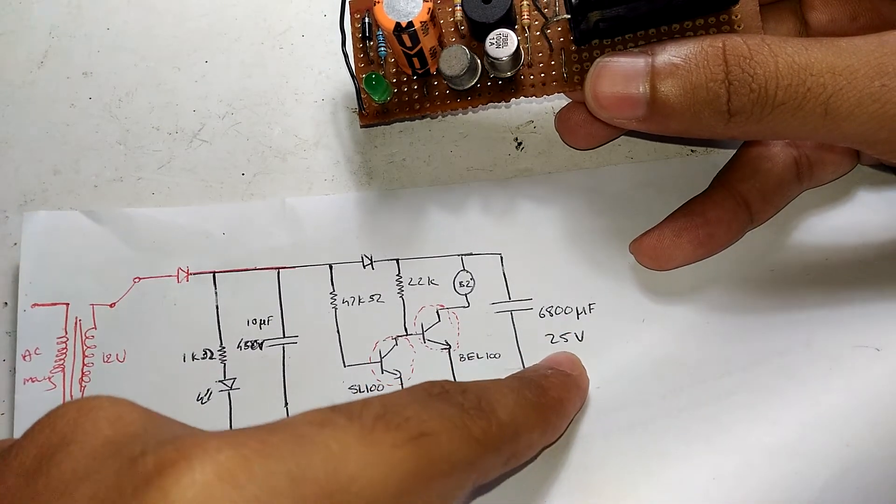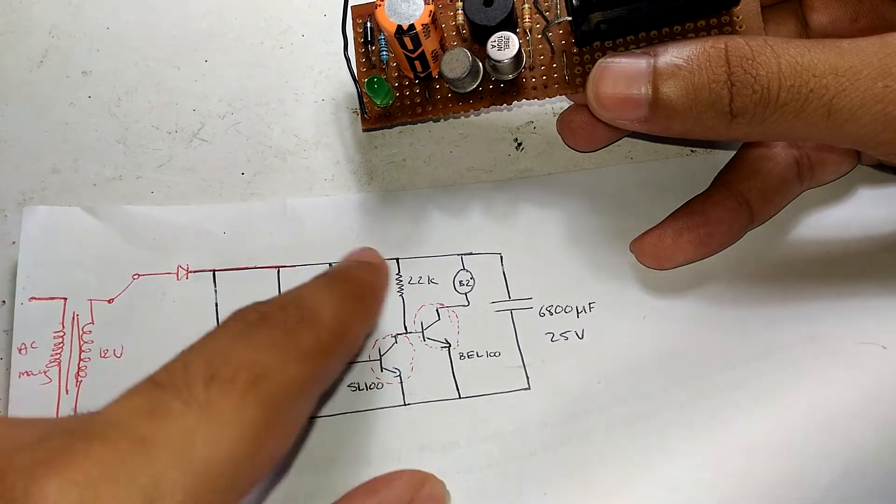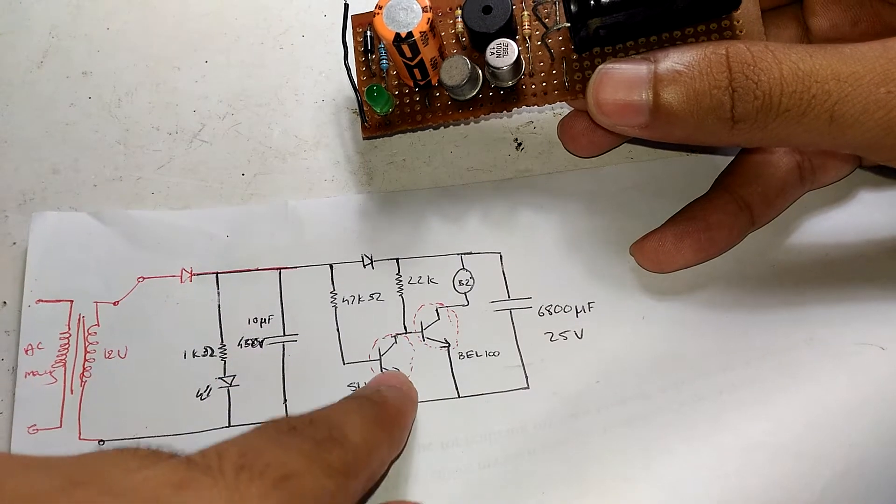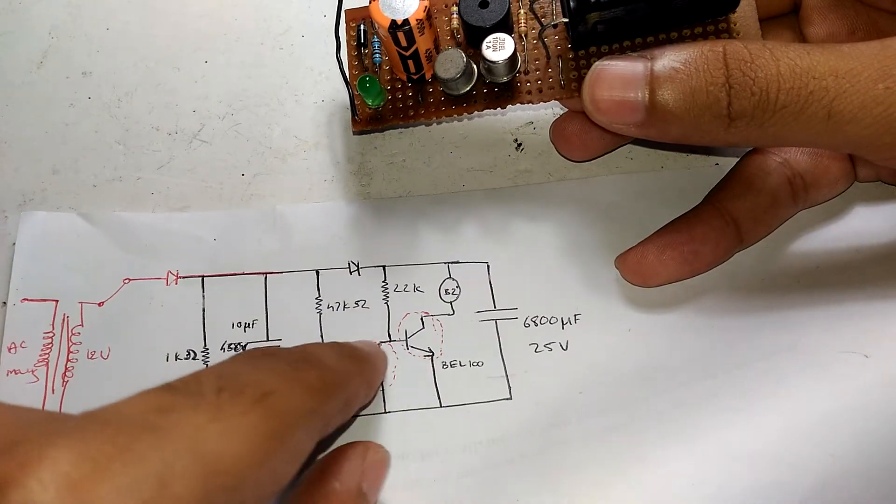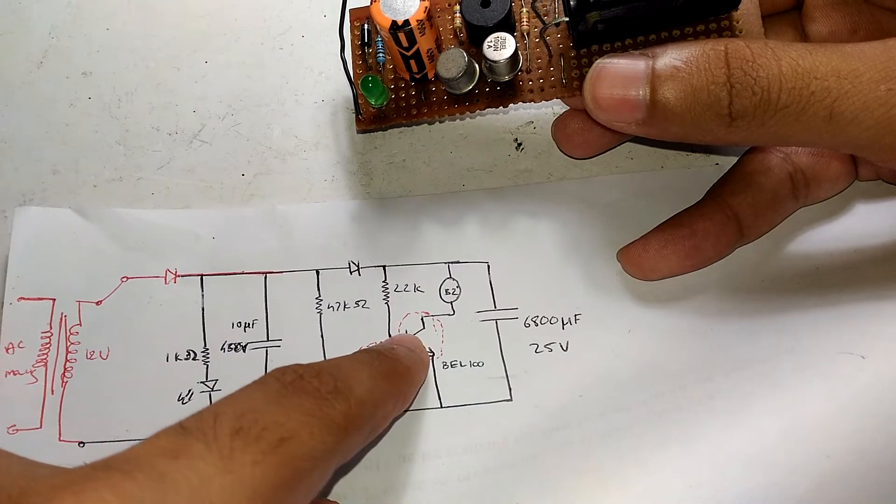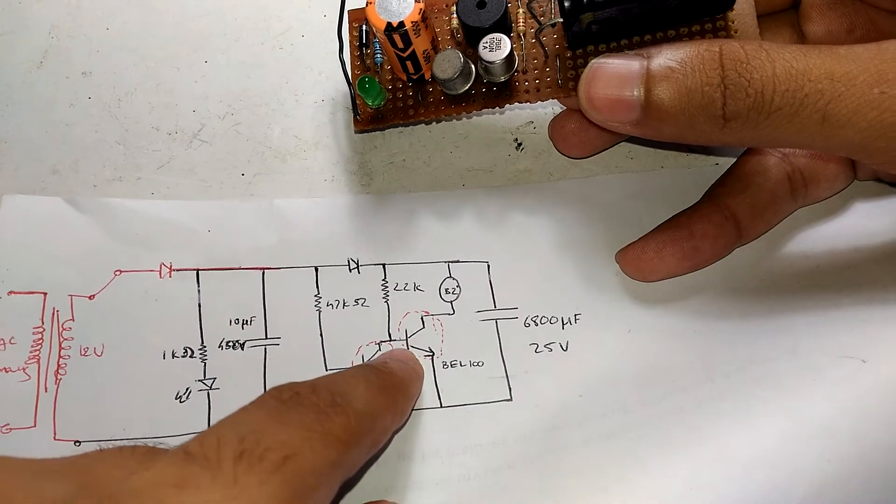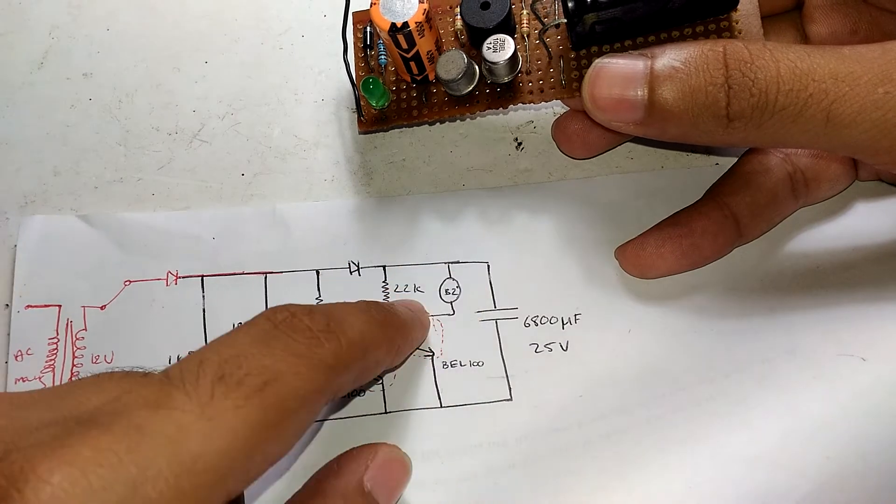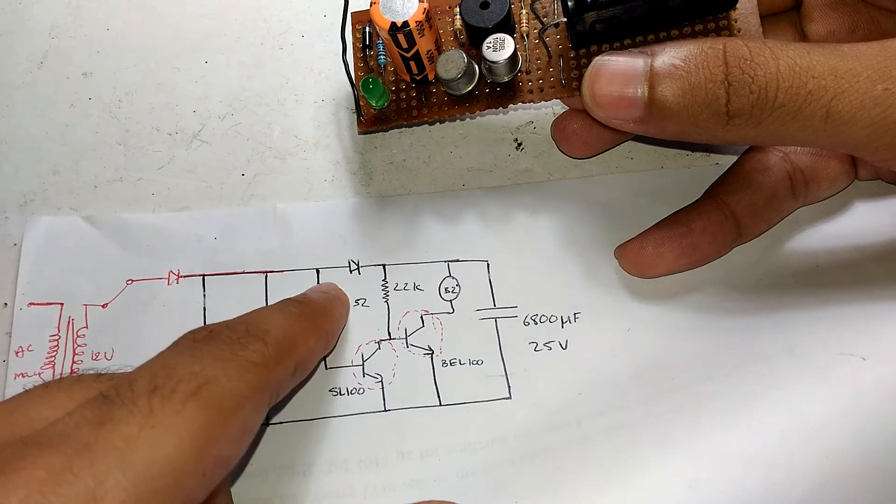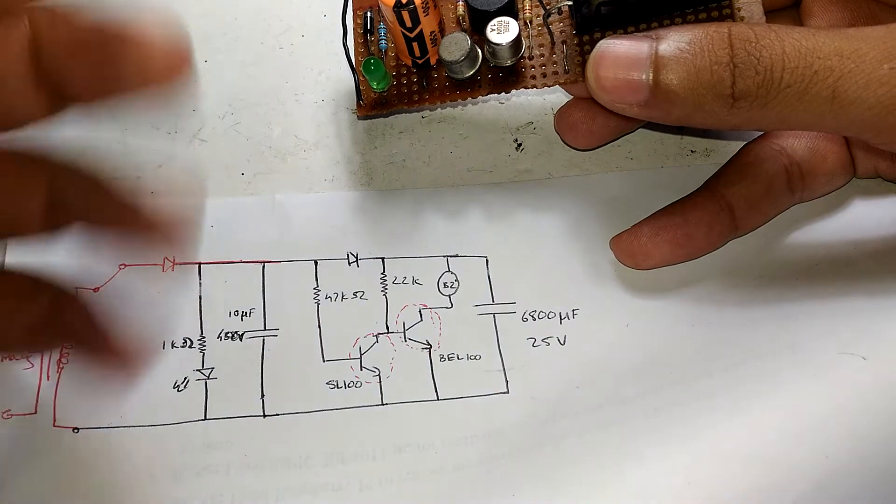The 12 volts gets rectified and goes straight to this 6800 microfarad capacitor, which is a huge value. At the same time, because this transistor is on due to the input current, it pulls the base of this second transistor towards ground. Being an NPN transistor, pulling the base to ground makes it turn off.